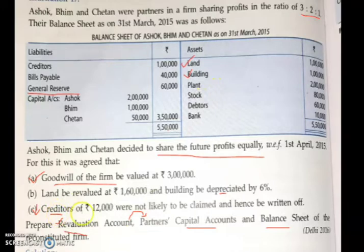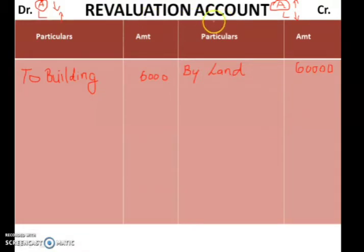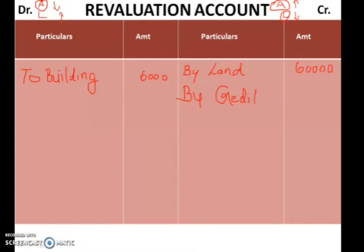One more item is given in the question, and that is creditors. Creditor is your liability, and you are asked that you are not supposed to pay this liability now — not likely to be claimed, hence to be written off. So your liability has decreased by 12,000. Where will you show it? In the revaluation account. Your liability is decreasing — liability decrease is shown on the credit side. So you write: By Creditors — 12,000.